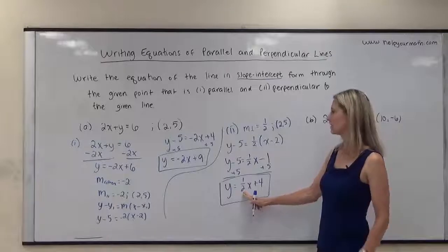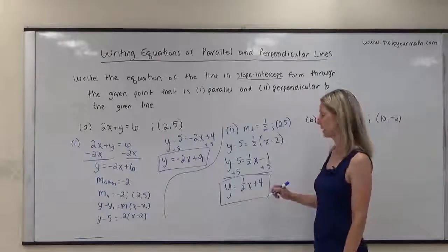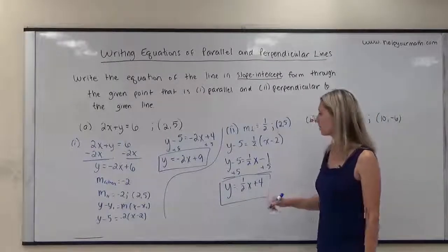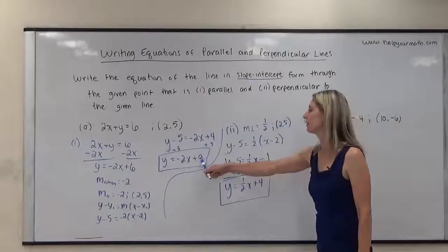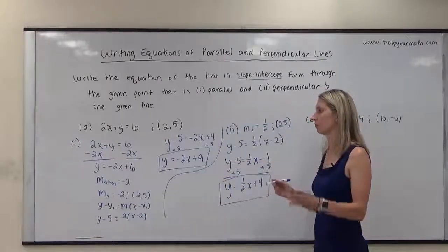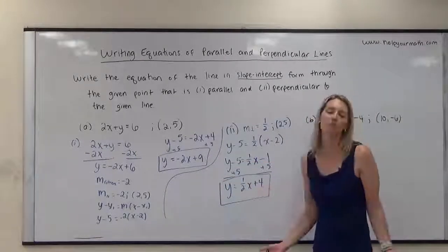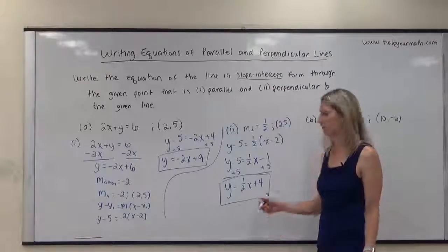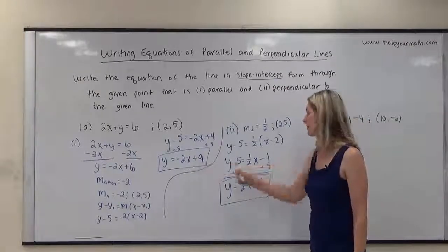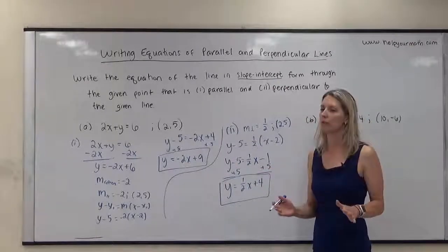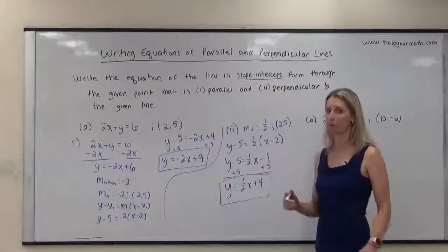Notice the slope is still the negative reciprocal, as it should be. A very common mistake students make is thinking that once you figure out the y-intercept for one line, it must be the same for the other. Notice the parallel line has y-intercept 9 and the perpendicular has y-intercept 4 — they are not the same. They are two separate equations, two different lines, and you have to do the work for both.